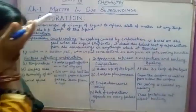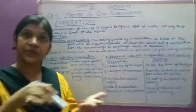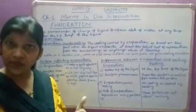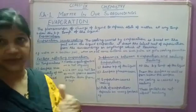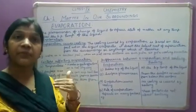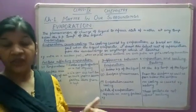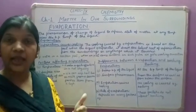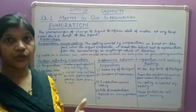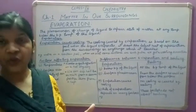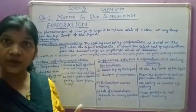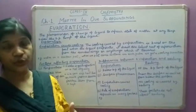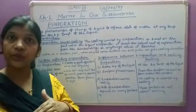Now we will explain the process of evaporation — how it is possible for liquid molecules to change into vapor state. The particles or molecules of liquid are not stationary and they have some kinetic energy at all temperatures. The molecules collide with each other and exchange their energies. Due to this, some particles at the surface get sufficient energy to change their state from liquid to vapor.